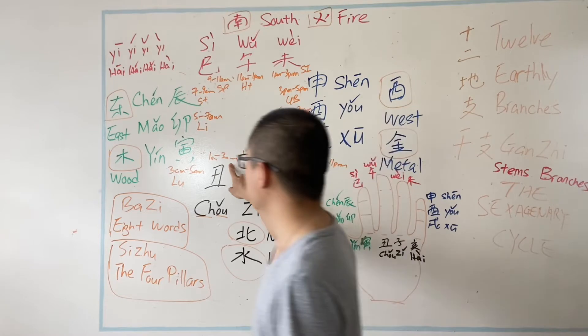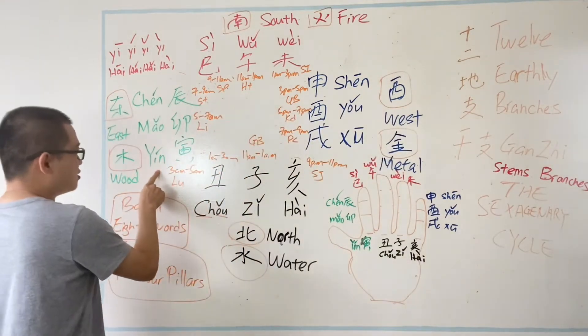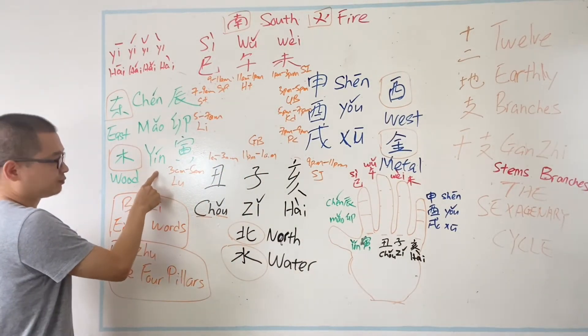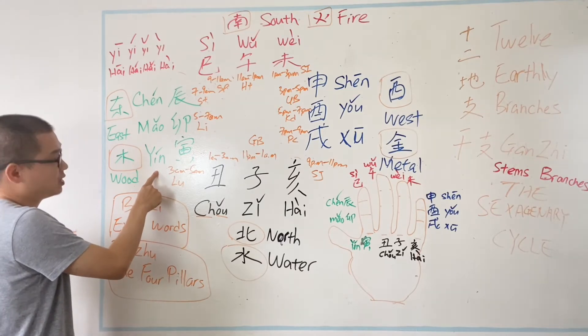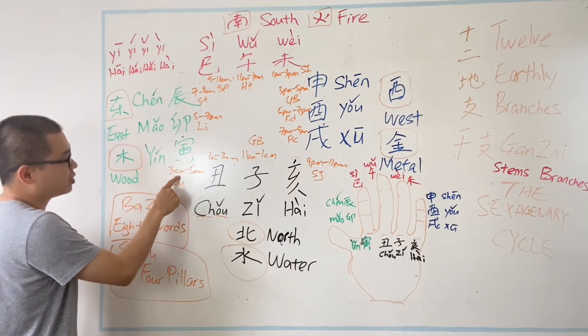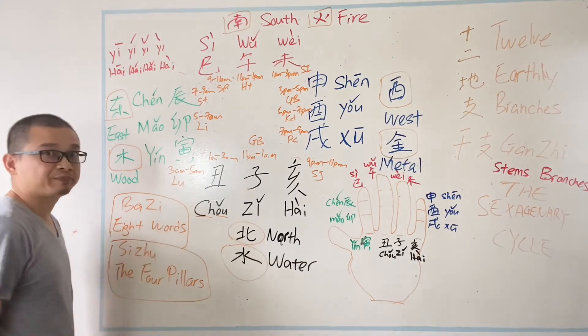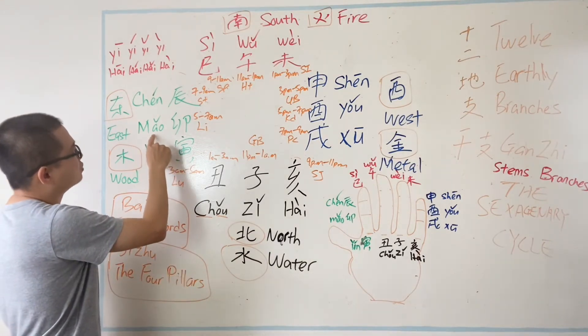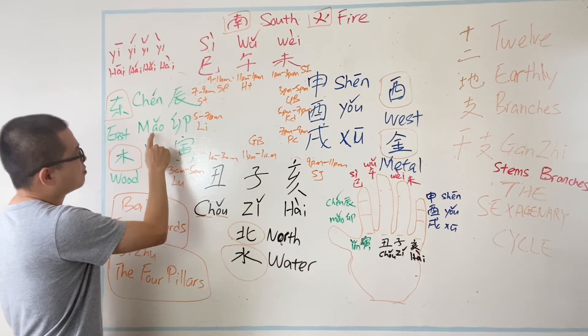寅时. 寅 time is actually controlling 3 to 5am.